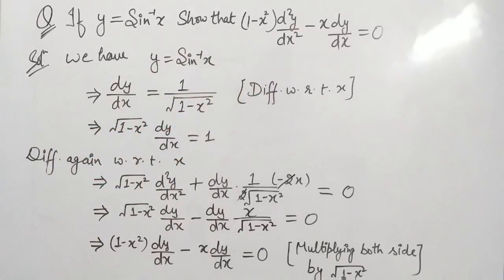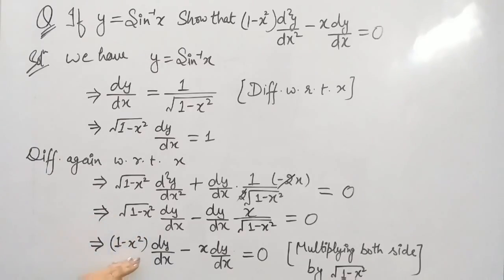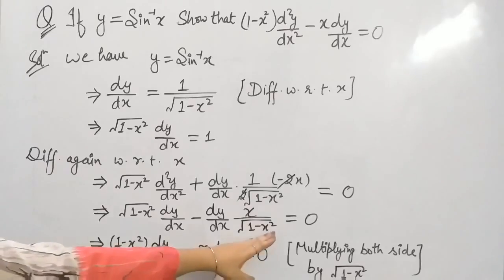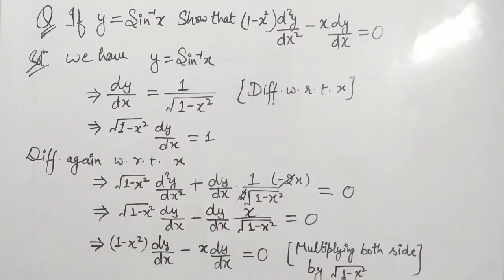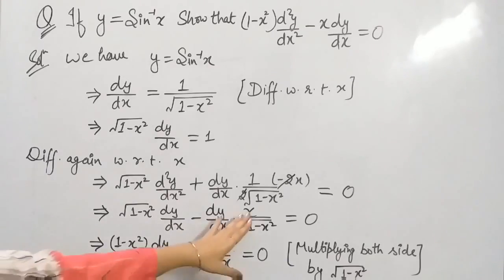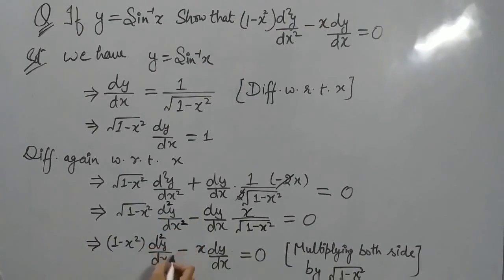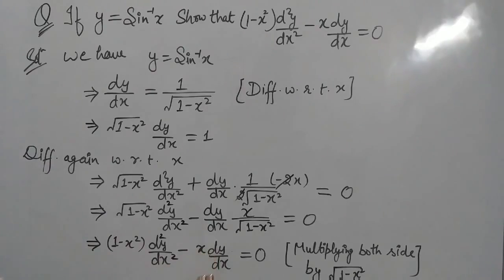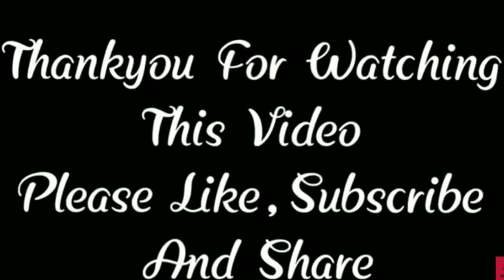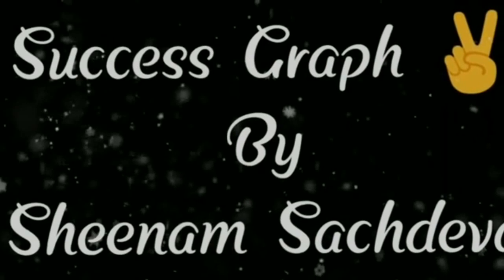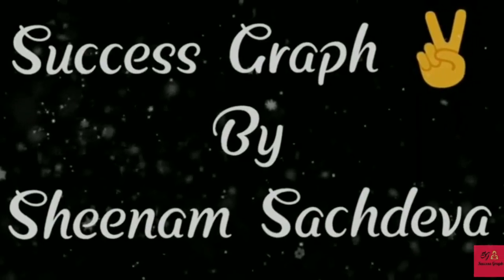Multiplying both sides by √(1 − x²), this term becomes (1 − x²)·d²y/dx², and √(1 − x²) cancels with √(1 − x²) in the second term, leaving x·dy/dx. There is a correction: d²y/dx² was missing earlier. So we get (1 − x²)·d²y/dx² minus x·dy/dx equals 0, which is what we had to prove. Thank you for watching. Please like, subscribe, and don't forget to share. For any query or suggestion, please comment below.